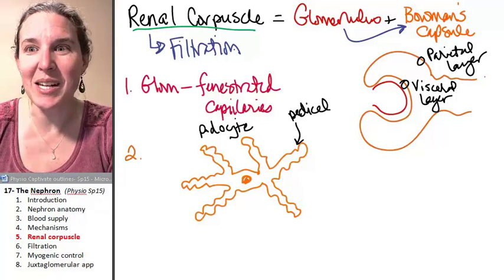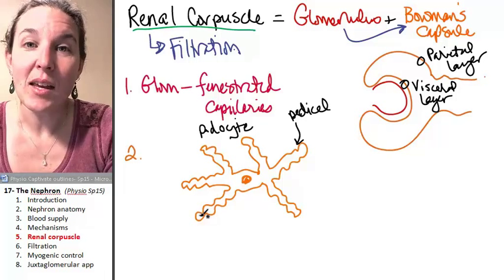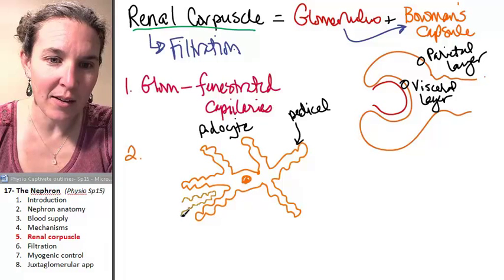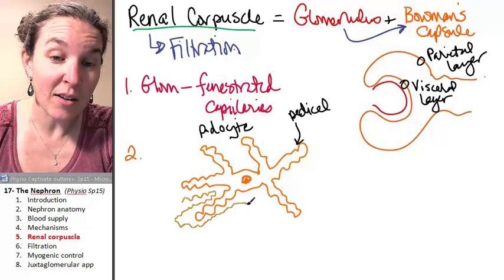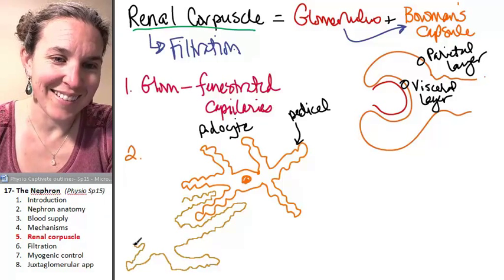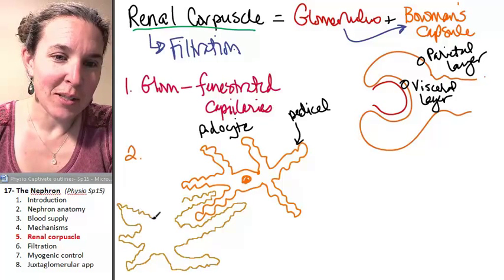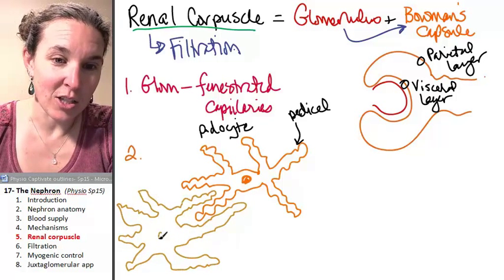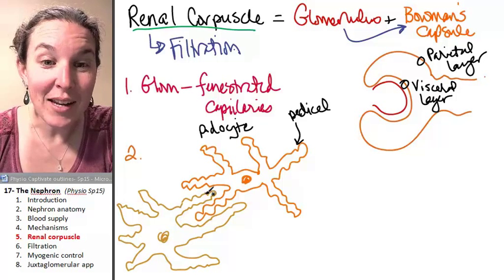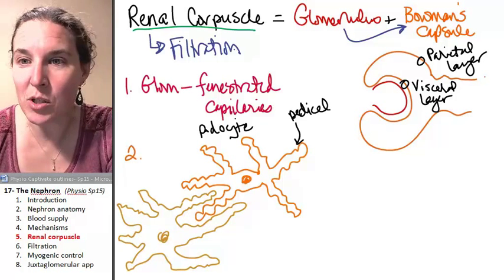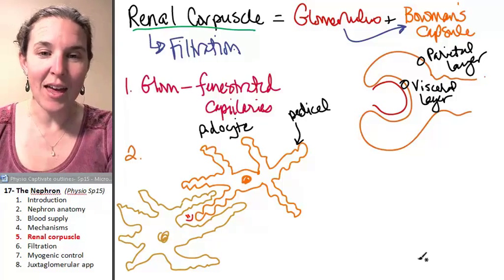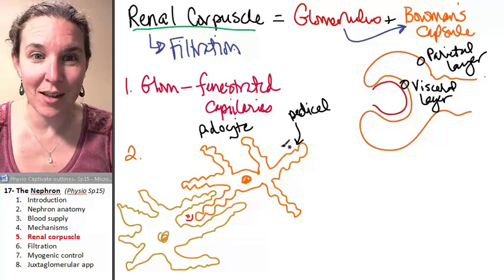These podocytes are squished on top of the glomerular capillaries — the fenestrated capillaries. The podocytes interdigitate. Here's another podocyte with its little pedicels. The pedicels interdigitate, but there are spaces in between. And deep in there are the glomerular capillaries that are fenestrated and leaky.